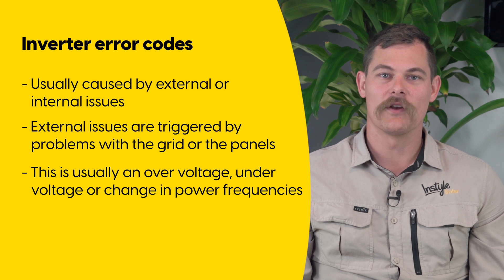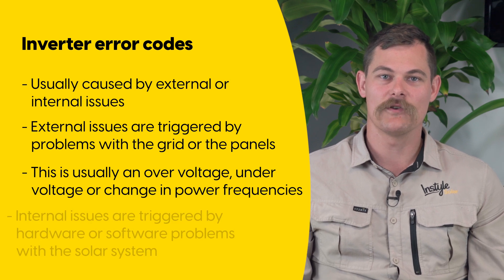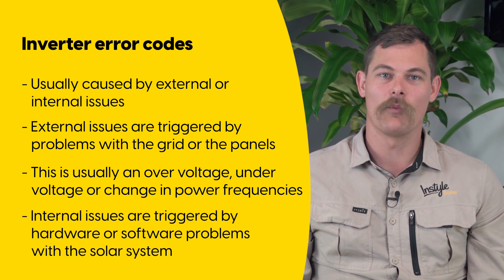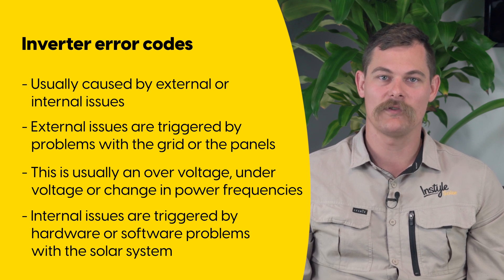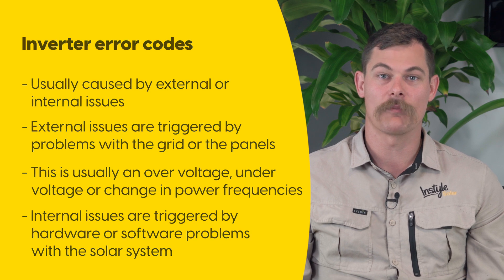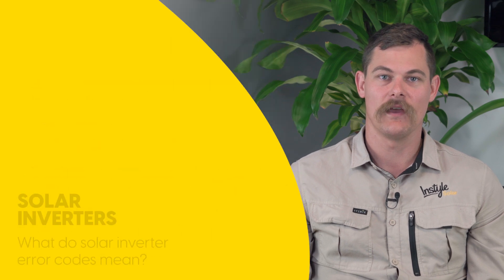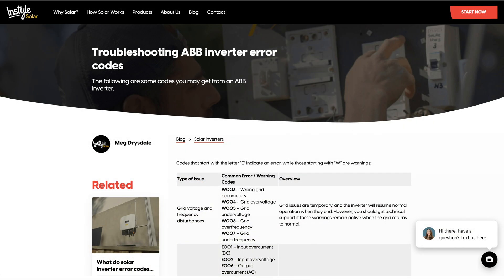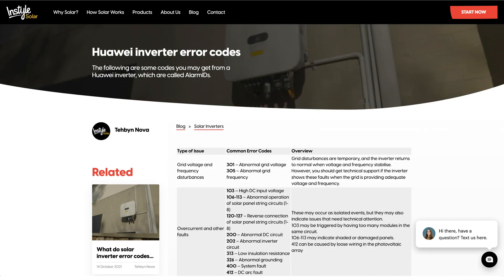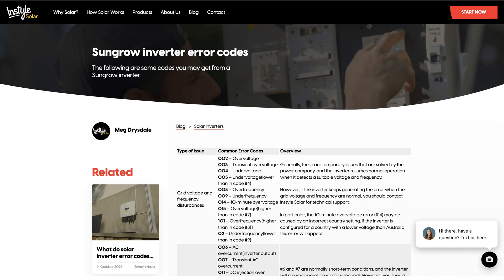Error codes generated by internal issues are usually to do with the hardware or software of your solar system. These can include electrical faults related to the solar panels, the connections and wiring, water ingress, or temperature issues. Each inverter brand has its own series of error codes, and descriptions for these codes can be found online or in the owner's manual.